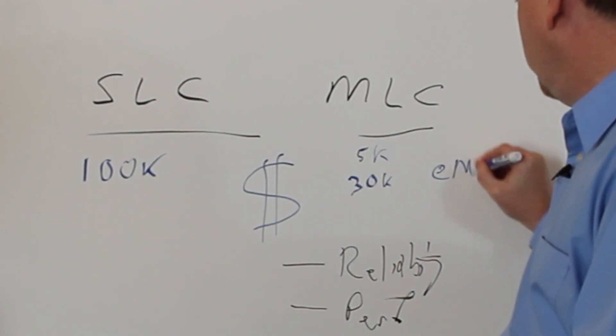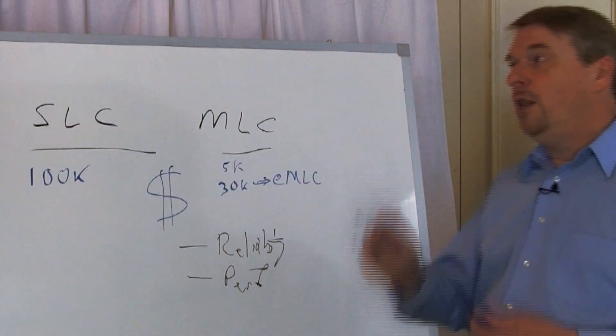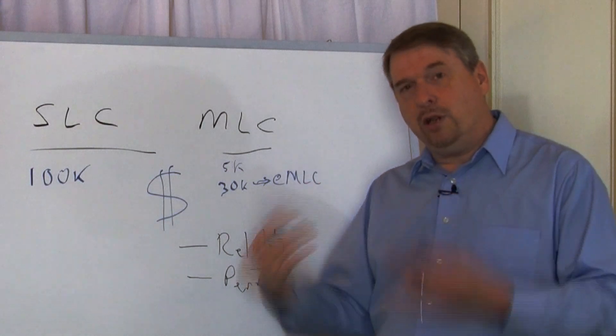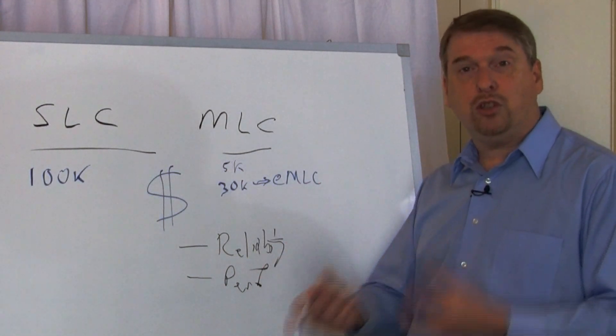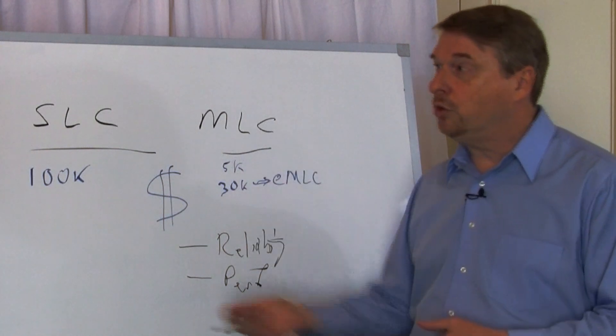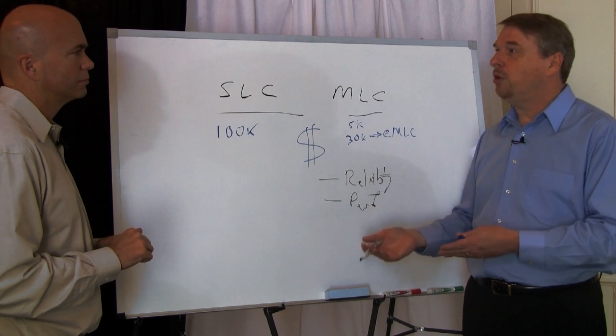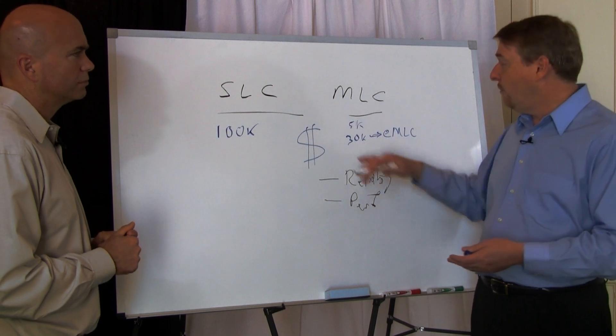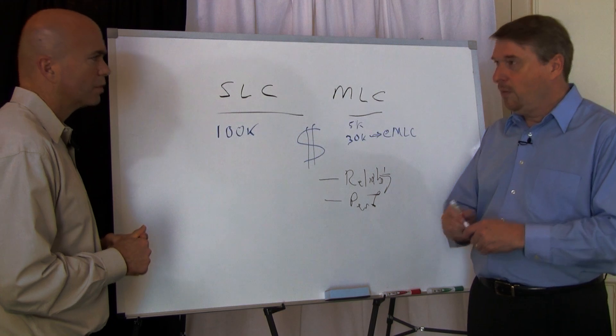The challenge with EMLC is what they've done is they've taken the flash and slowed it down a little bit. So they're writing to it or erasing it slower than they were with the regular consumer MLC, which is kind of counterintuitive. You really buy flash to go fast. So if you're slowing it down for endurance, then you're kind of going backwards rather than forwards.